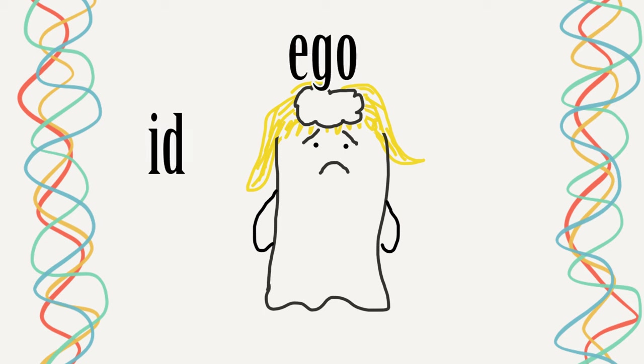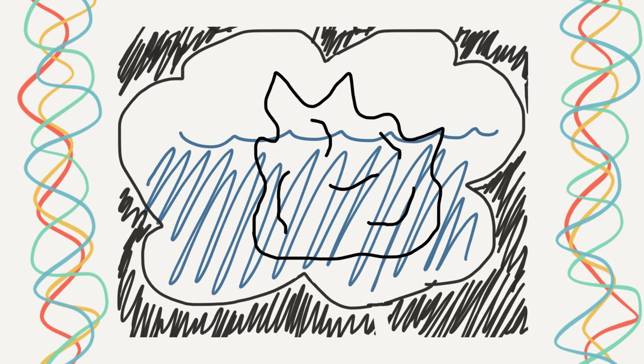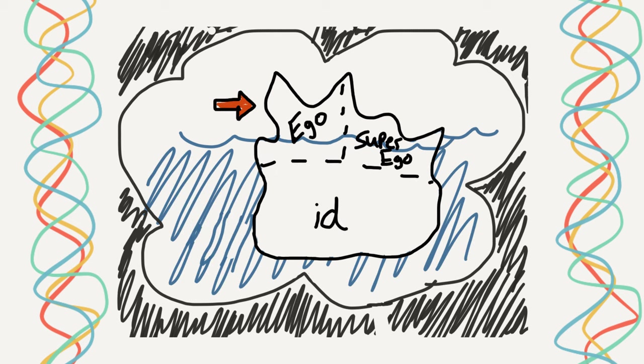The id, the ego, and the superego. And he illustrated it very well by giving a metaphor of an iceberg. Now, when you look at an iceberg, a lot of its mass is below the surface where you can't really see it. So, if we look at the top, we can see the ego.